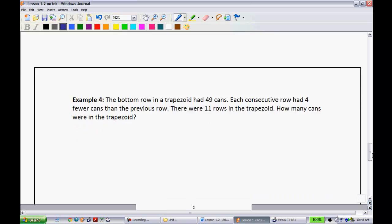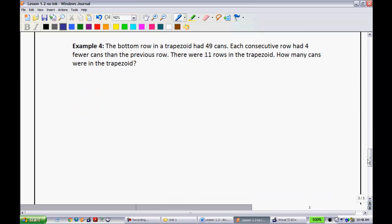And lastly, word problem. Students' favorites. This is a common word problem that they like to give. We have ones with cans stacked on one another. Example four. The bottom row in a trapezoid had 49 cans. Each consecutive row had four fewer cans than the previous row. There were 11 rows in the trapezoid. How many cans? To remind you what a trapezoid looks like, there's basically two parallel lines, like so. And then, there'll be two lines kind of maybe coming down like this. So, let's say this bottom line right here had 49 cans. Then the next one is going to have four fewer cans. This one had 45 and so on. So, we're trying to figure out how many cans were in this trapezoid together.